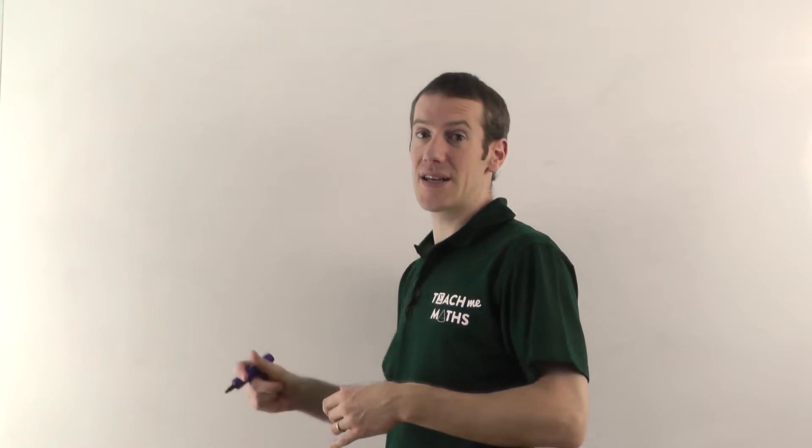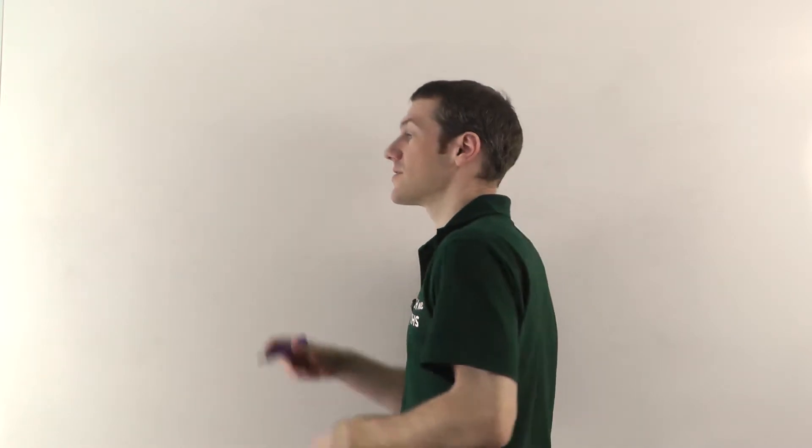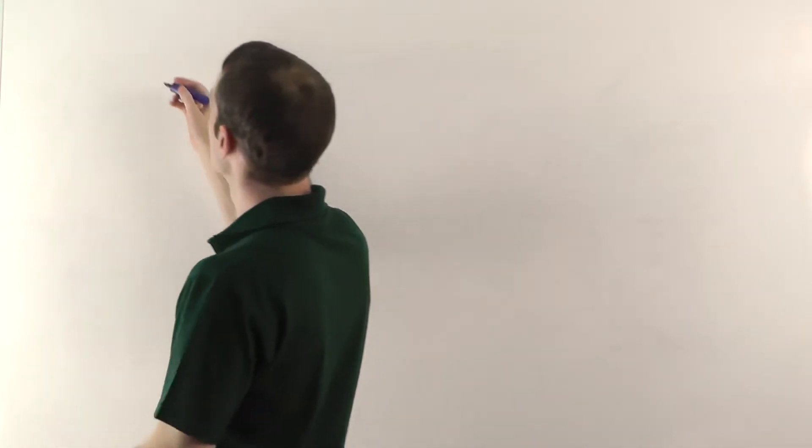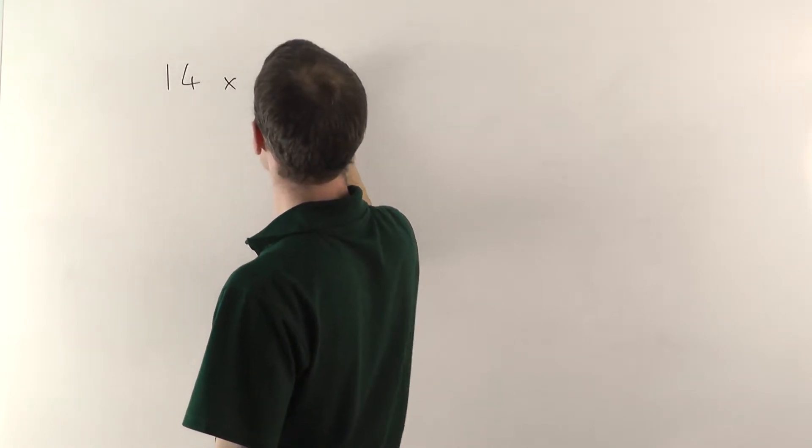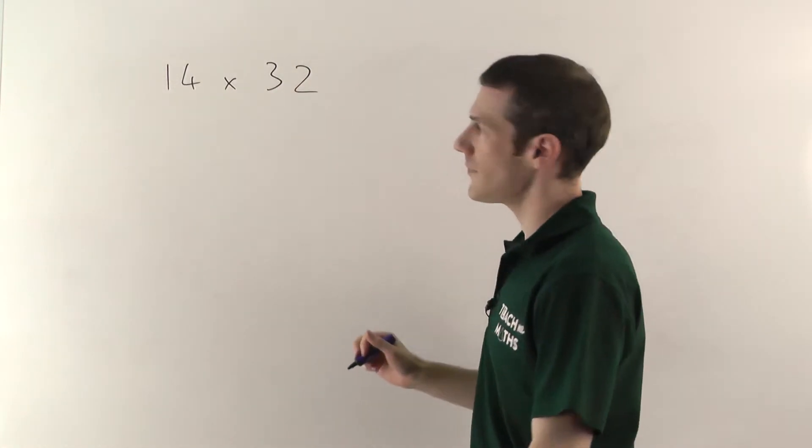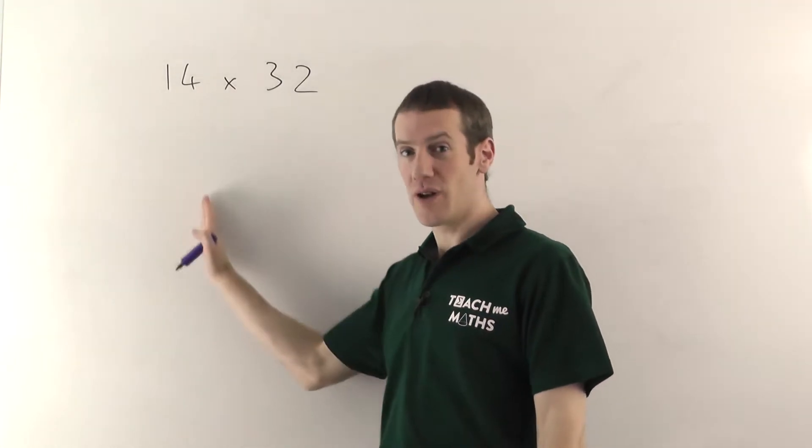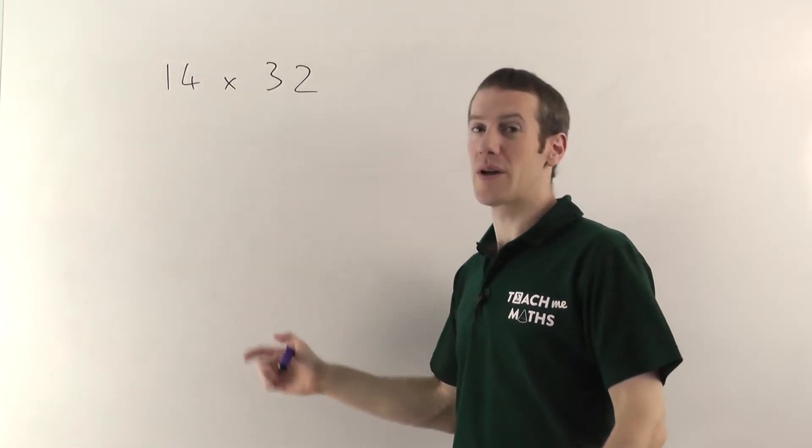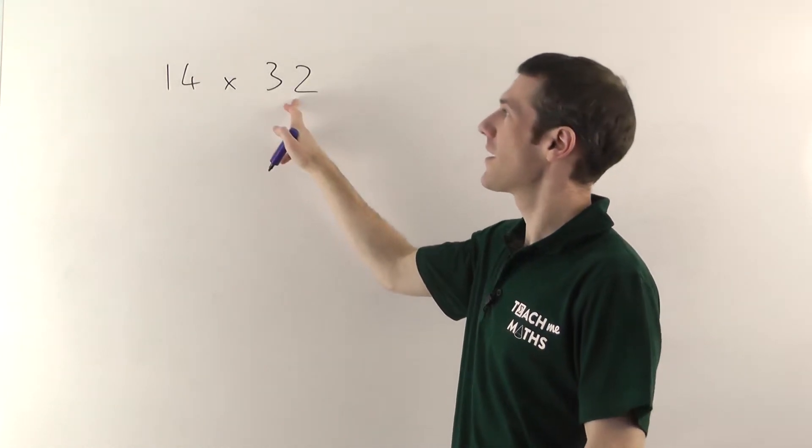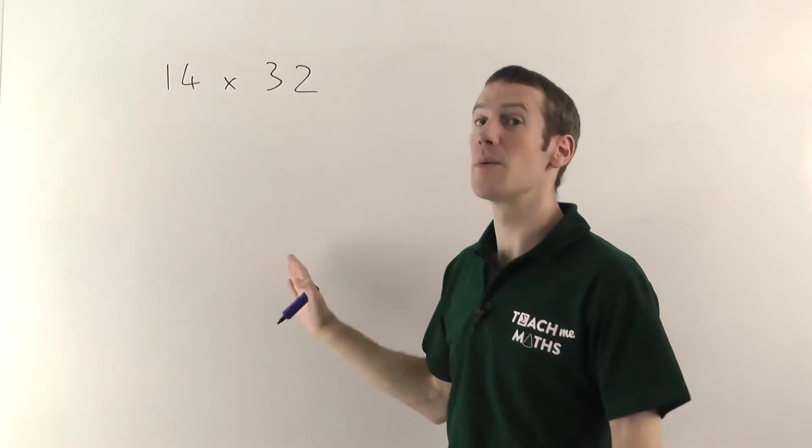So we're going to use the same numbers as we did in the traditional and grid videos so you can compare them if you want to. So this is going to be 14 times 32. Now the way this works is you basically halve one side and you double the other. And you just keep going until you can turn the calculation from something relatively complicated into something much easier.